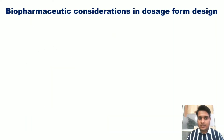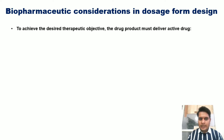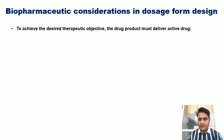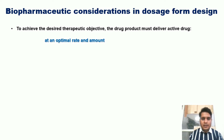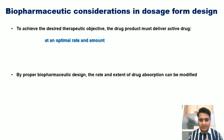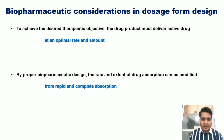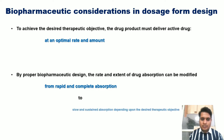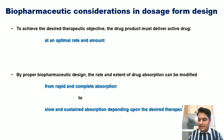In this slide we will see the different biopharmaceutic considerations while designing any dosage form. To achieve the desired therapeutic objective, the drug must be delivered at the absorption site for better absorption. The rate and amount of drug absorption should be determined and modified accordingly. By proper biopharmaceutic designing, the rate and extent of drug absorption can be modified — from rapid or complete absorption to slow and sustained absorption, depending upon the desired therapeutic effect.